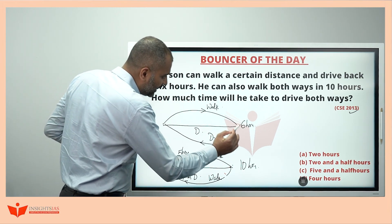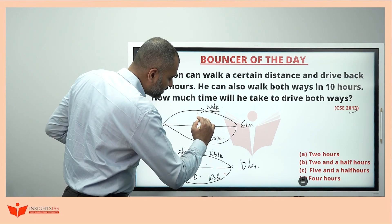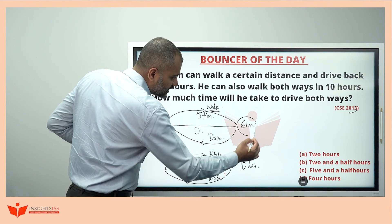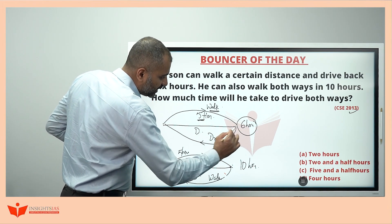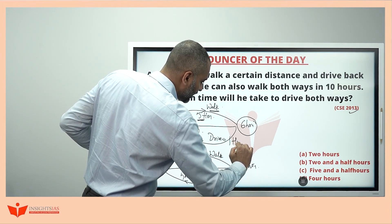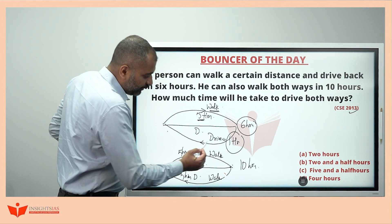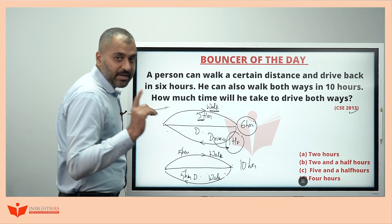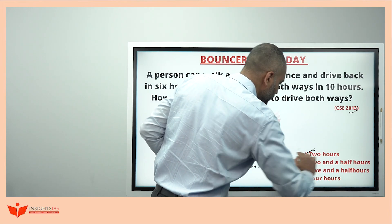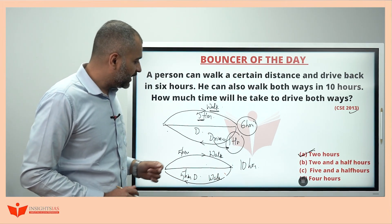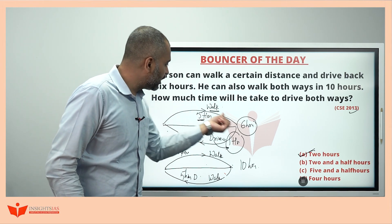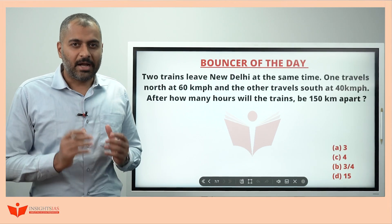So, from here to here, while walking, he takes 5 hours. Out of 6 hours, if one side walking takes 5 hours means, the other side driving will take 1 hour. If for driving, one side, it takes 1 hour means, for 2 side driving, it will take 2 hours. 1 hour driving, coming from here to here and going back, again takes 2 hours.